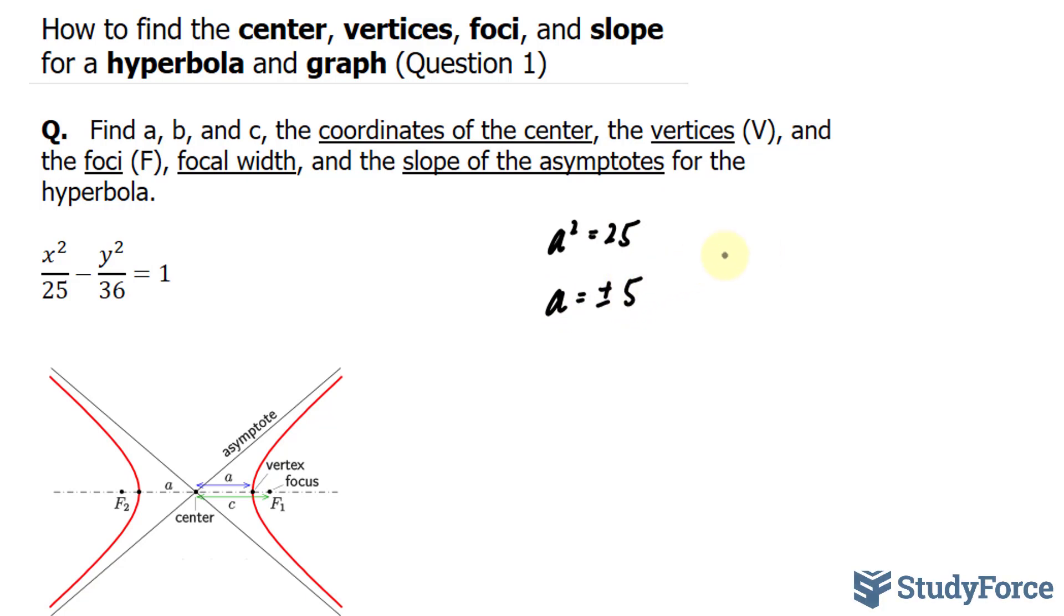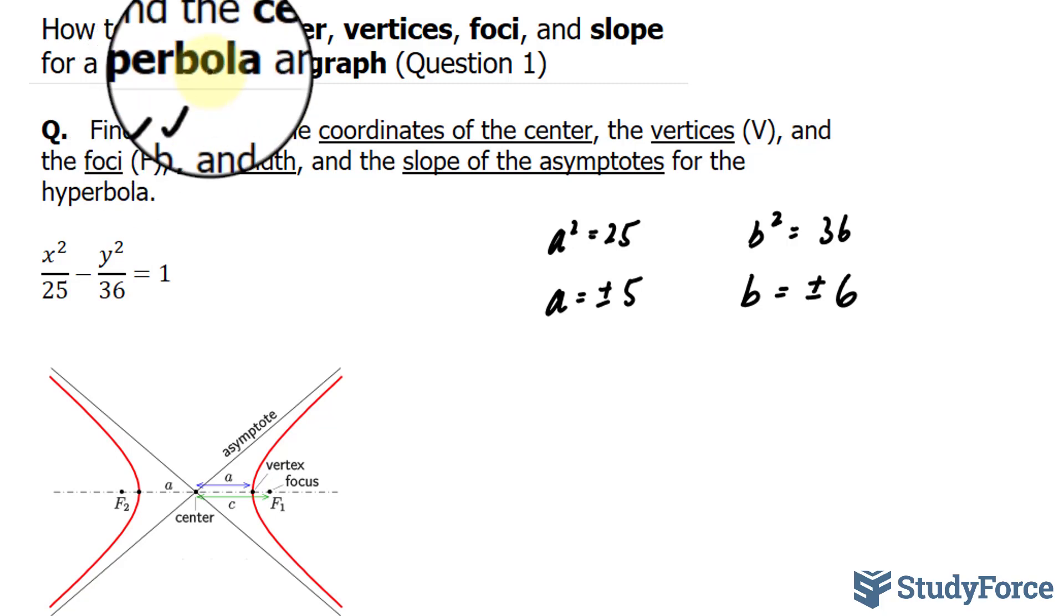The b term is the one associated with the negative term. In our case, the negative term is y. So b squared is equal to 36. And the square root of 36 is plus minus 6. So we found our a, we found our b.